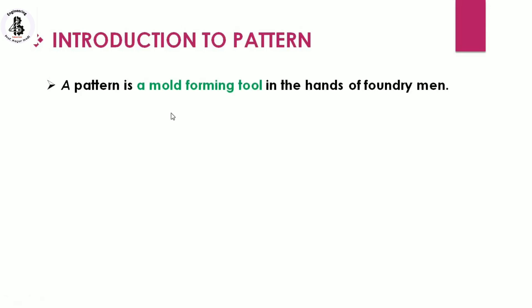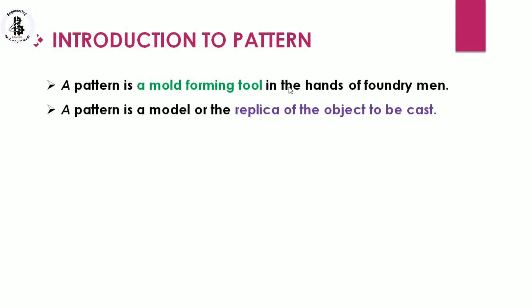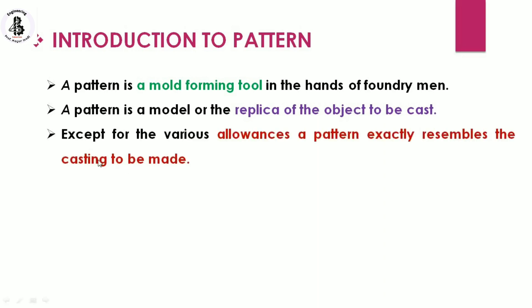A pattern is a mold-forming tool in the hands of a foundryman, or in simple terms, a pattern is a model representing a replica of the object to be cast — quite similar in shape and size. Except for the various allowances, a pattern exactly resembles the casting to be made.